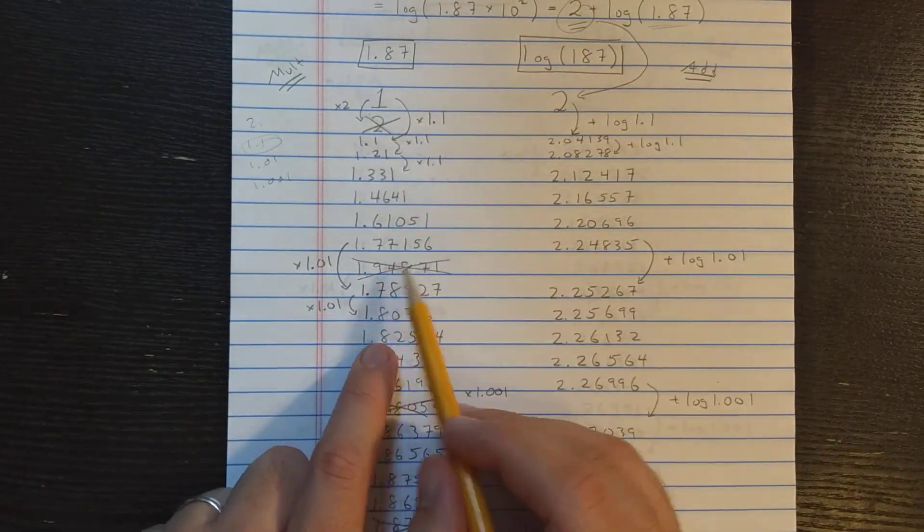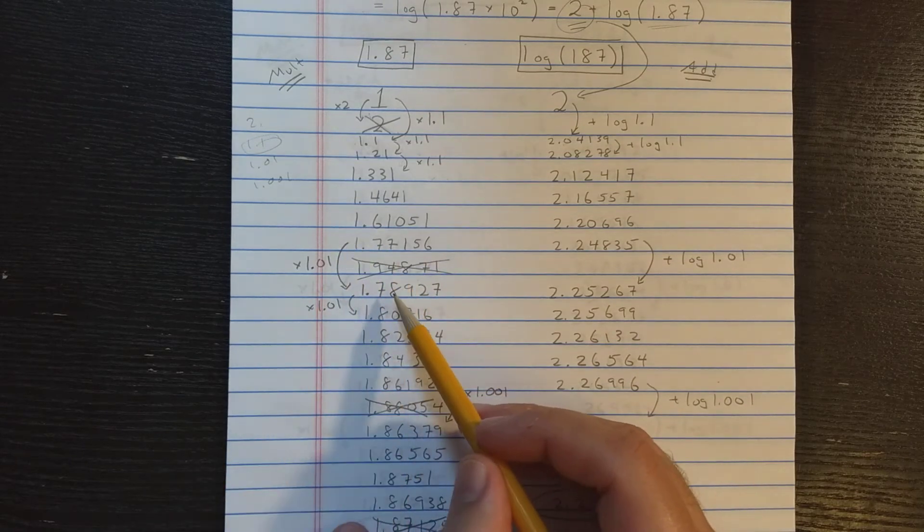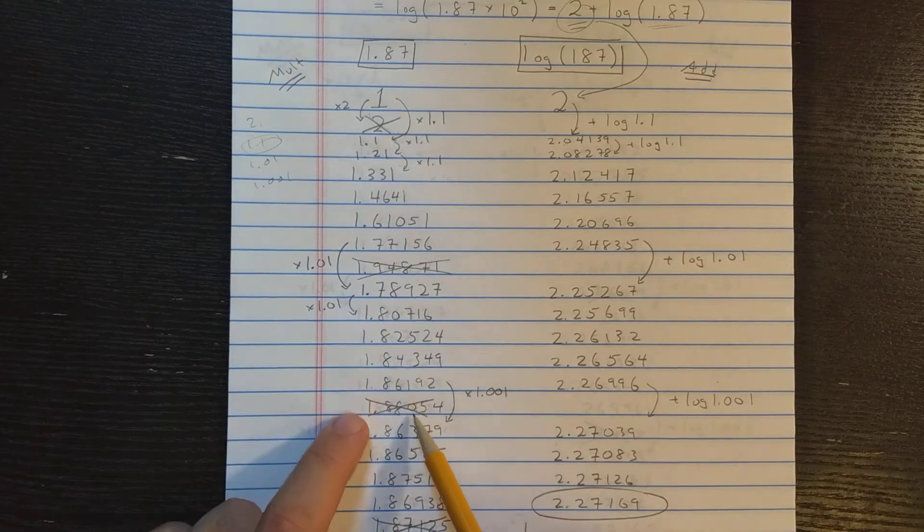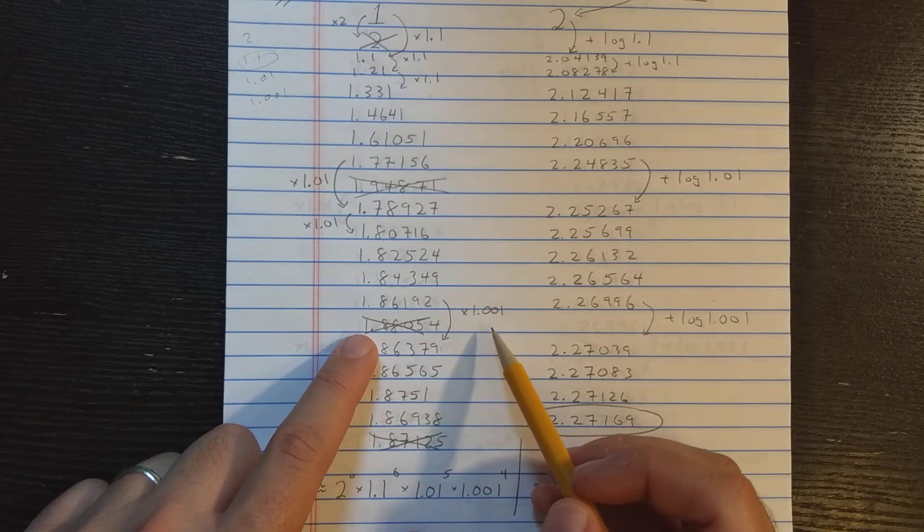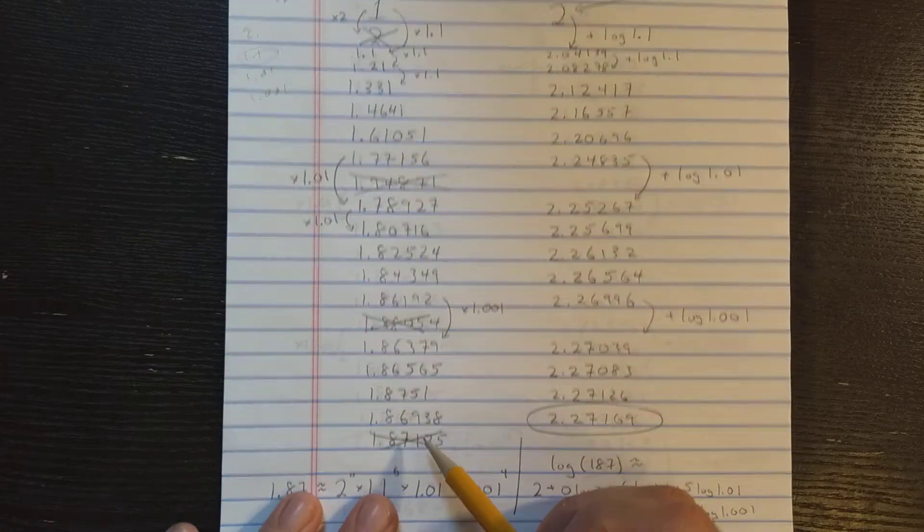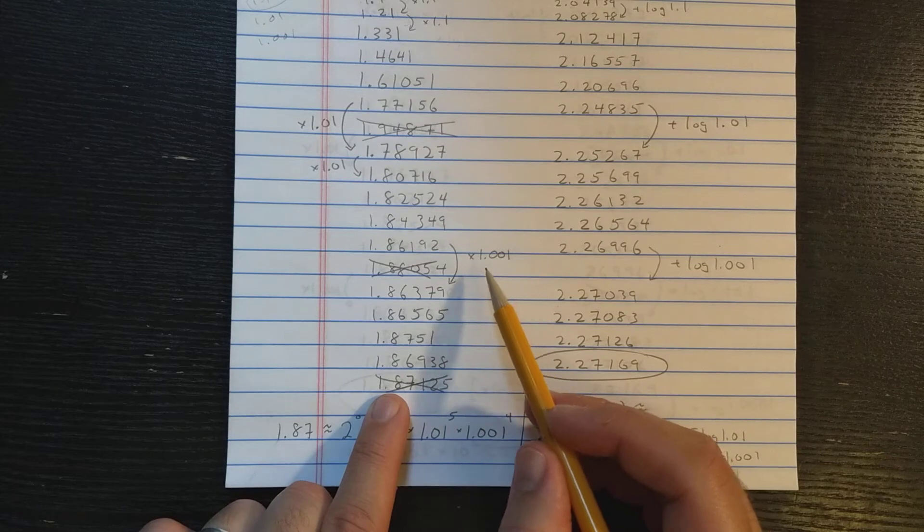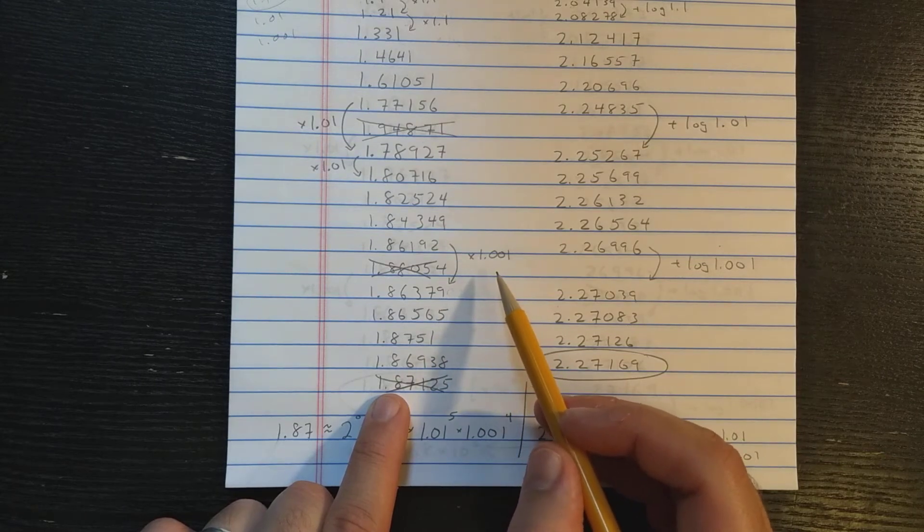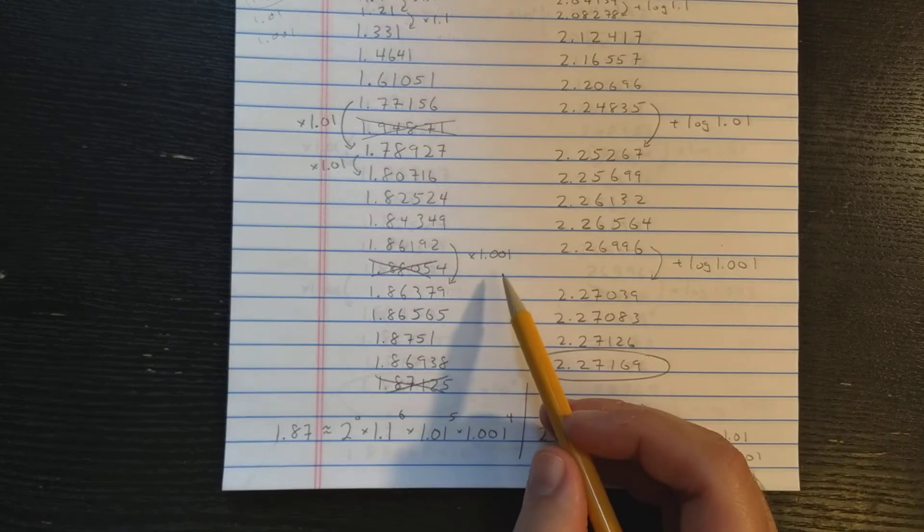Once I go too far here, then I go to the next multiplier. I do that a few times. Now I've gone over 1.87 again. So I changed to multiplier 1.001. And I do this until I go over again. Now I'm ending here with this third decimal place instead of the fourth, as I did in the first example.